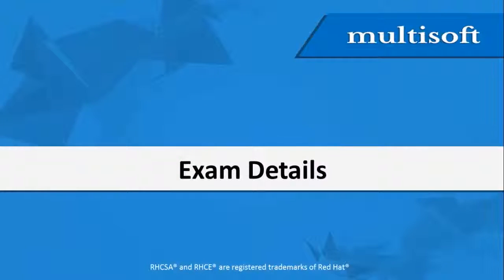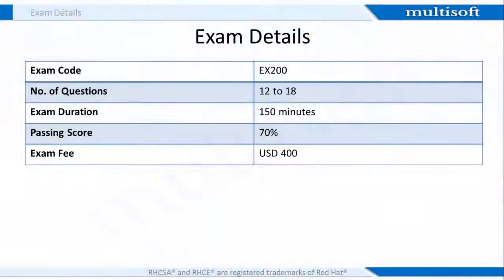Now let's look at the exam details. The performance-based Red Hat Certified System Administrator exam, i.e. EX200, has 12 to 18 questions that need to be completed within a stipulated time of 2.5 hours. In order to clear the exam, you need to secure at least 70% marks. This exam tests your knowledge and skills in the area of system administration common across a wide range of environments and deployment scenarios.